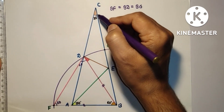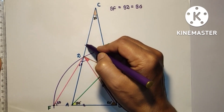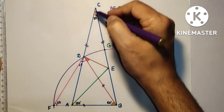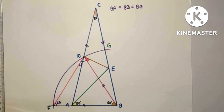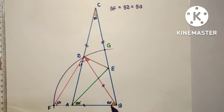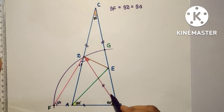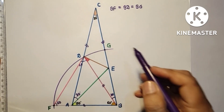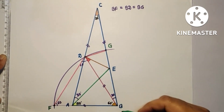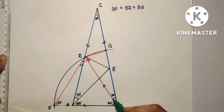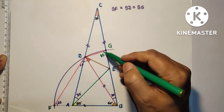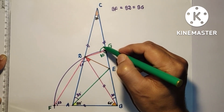Since angle ACB is 20 degrees and CA equals CB, we have angle CBA equal to angle CAB, and each equals 80 degrees. Since the whole angle CBA is 80 degrees and angle ABD is 60 degrees, angle DBC is only 20 degrees. The whole angle is 80 degrees and angle BAE is 50 degrees, so angle ABD is 30 degrees.